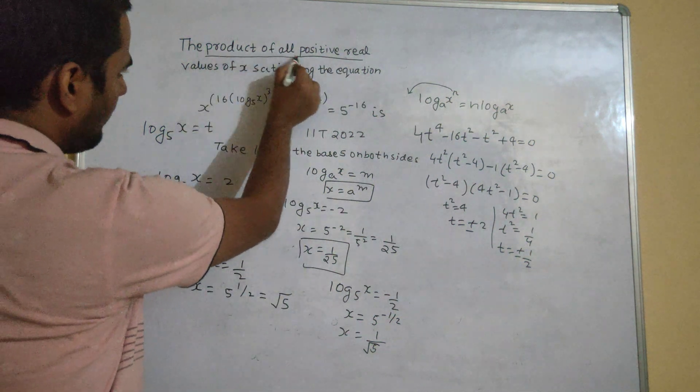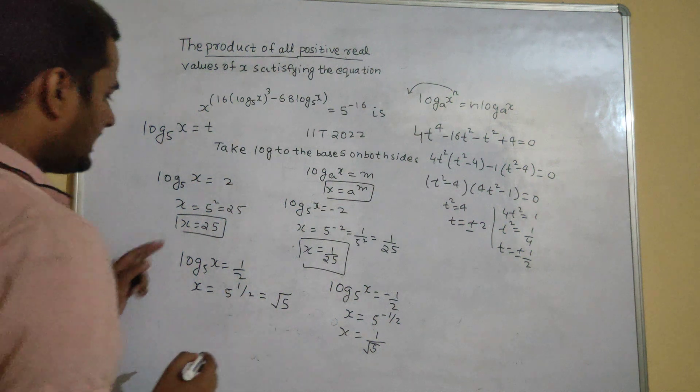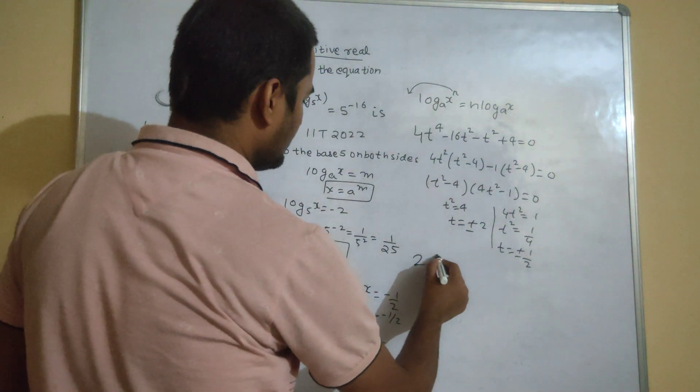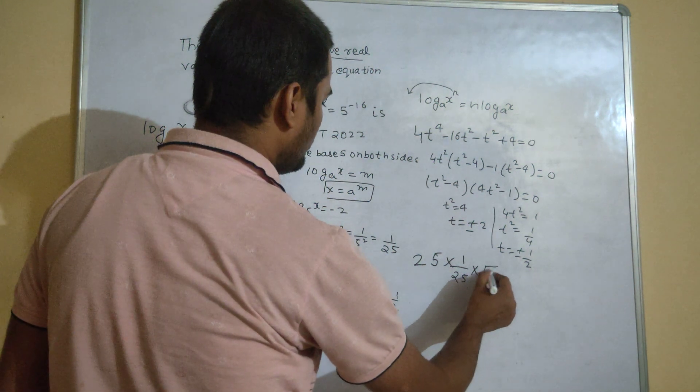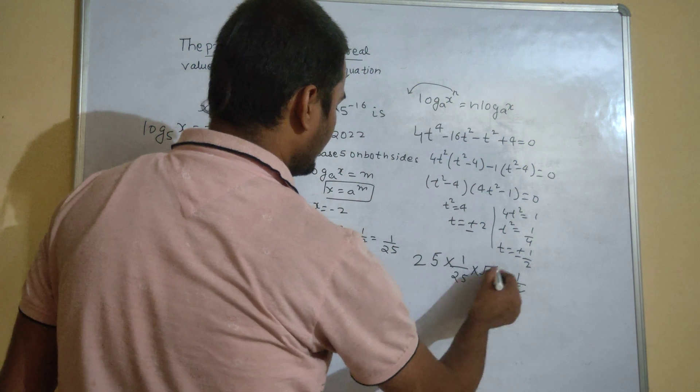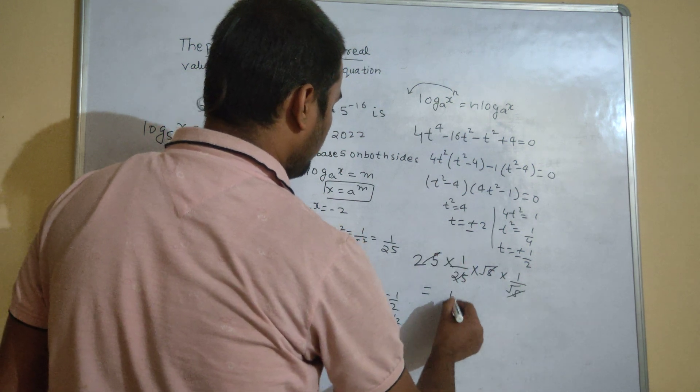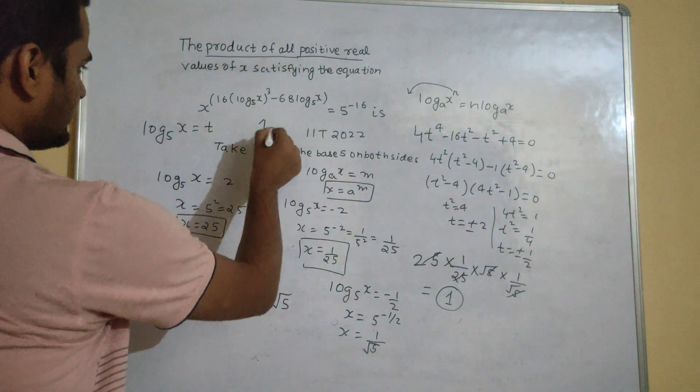They are asking the product of all positive because they are all positive and real. So let's find their product. So 25 multiplied by 1 by 25 multiplied by root 5 multiplied by 1 by root 5. They will cancel each other and we will get 1 as our final answer. So what was the answer of this question?